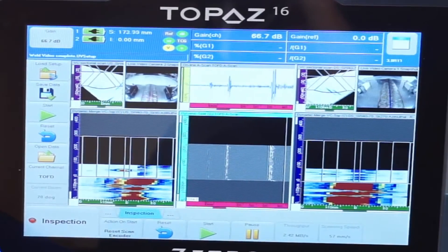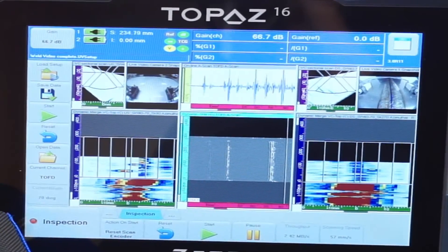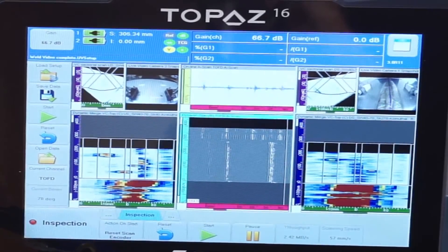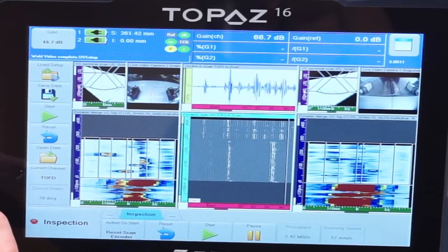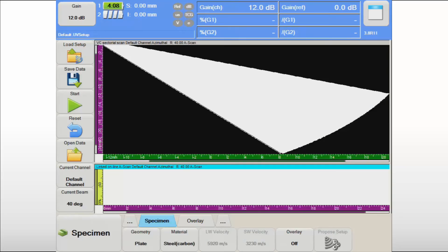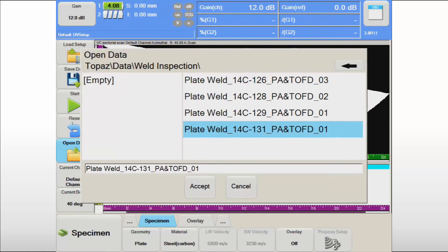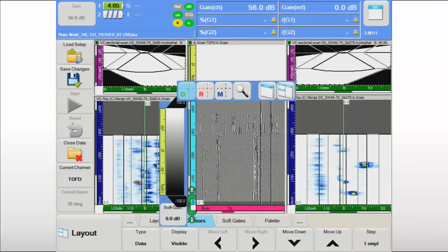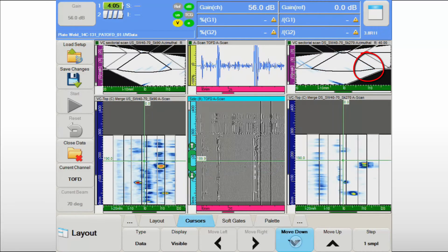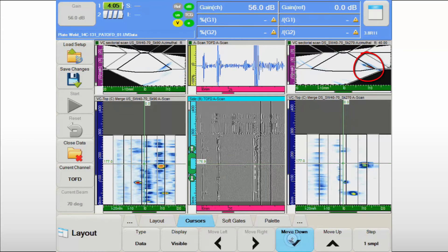The onboard 120 GB solid state drive allows for storage of more than 100 such inspection data files, therefore eliminating the need for time-consuming data transfer during the work shift. Previously recorded data files can be easily retrieved using the intuitive UltraVision Touch interface. By moving the data cursor, the data analyst can scroll through the inspection data to validate the quality of the recording and to identify critical regions. To perform the detailed evaluation of the indications, the data analyst can load dedicated layouts optimized for each inspection technique.